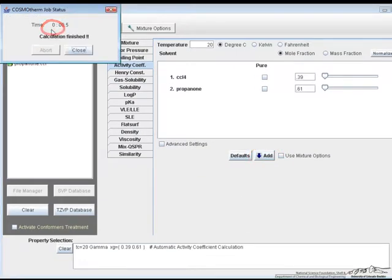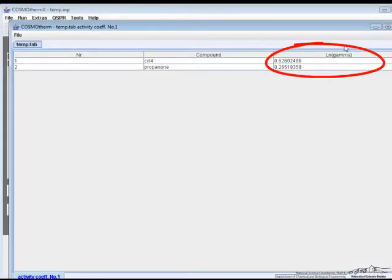We'll run our calculation and when it's done press the close button and we'll see that the ln of the activity coefficient is given here.